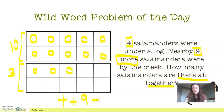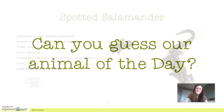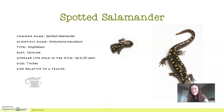Using that information, can you guess what our animal of the day will be? If you guessed salamander, you would be correct! Today we're going to be learning about the spotted salamander. This is an amphibian. They are carnivorous, which means they eat meat, and they live up to 20 years in the wild, which is amazing. They can grow up to seven inches long — about the size of a teacup.